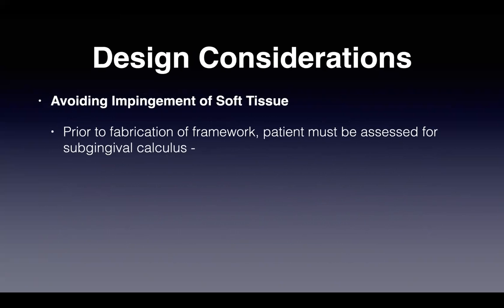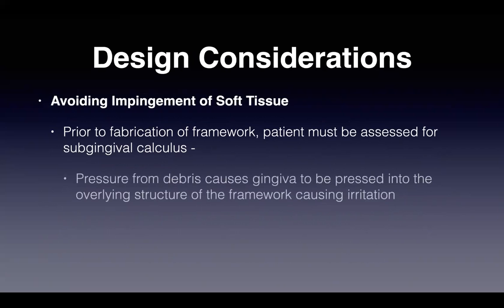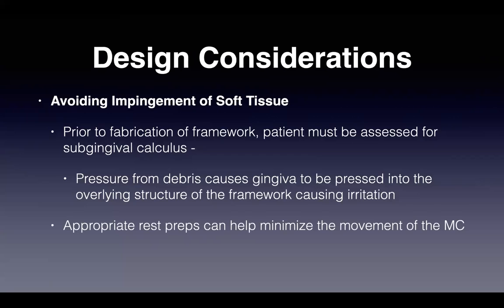One way to avoid impinging on soft tissue is assessing patients for subgingival calculus prior to framework fabrication. Pressure from debris causes the gingiva to be pulled away from the cervical margin, pressing it into the overlying framework and causing irritation. Adding appropriate rest preparations helps minimize major connector movement, and incorporating slight gingival relief on the intaglio portion of the framework is also required.